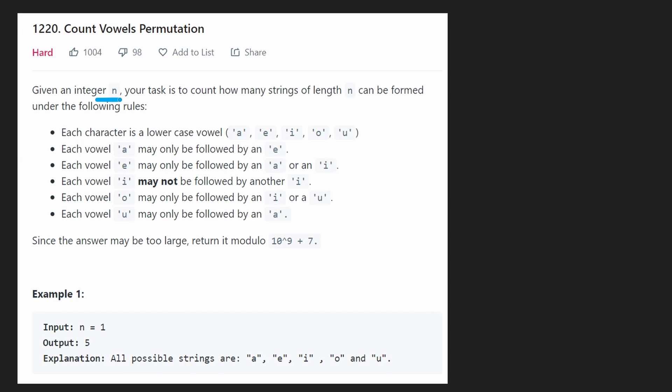We're given an integer n and our task is to count how many strings of length n can be formed under the following rules. We're basically allowed to construct strings only using these five characters, but for each character there's a rule. Any a character can only be followed by an e character. Any e character can only be followed by either an a or an i, and any i cannot be followed by another i. Basically that means it can be followed by any other character except for i, so any of the other four characters.